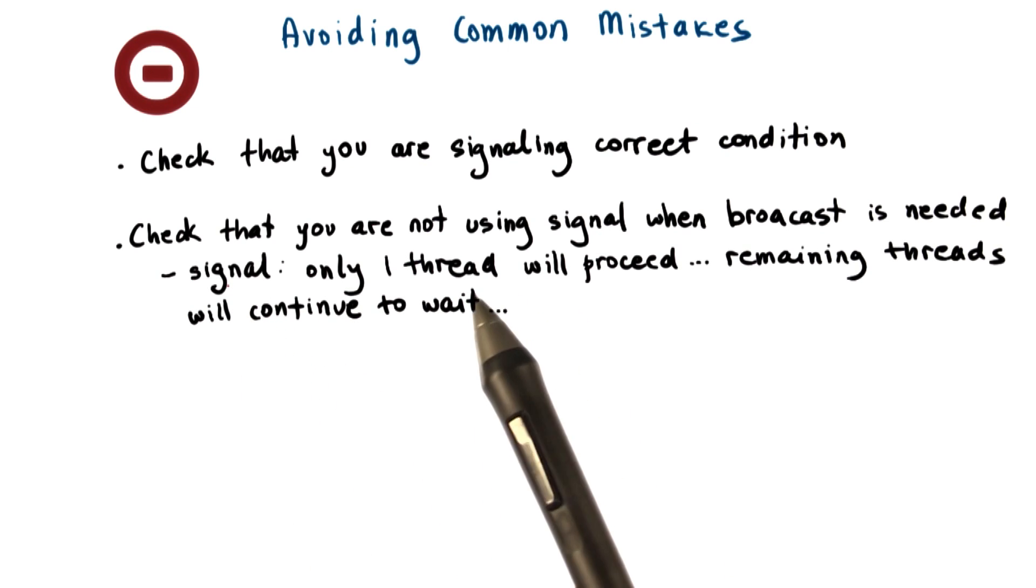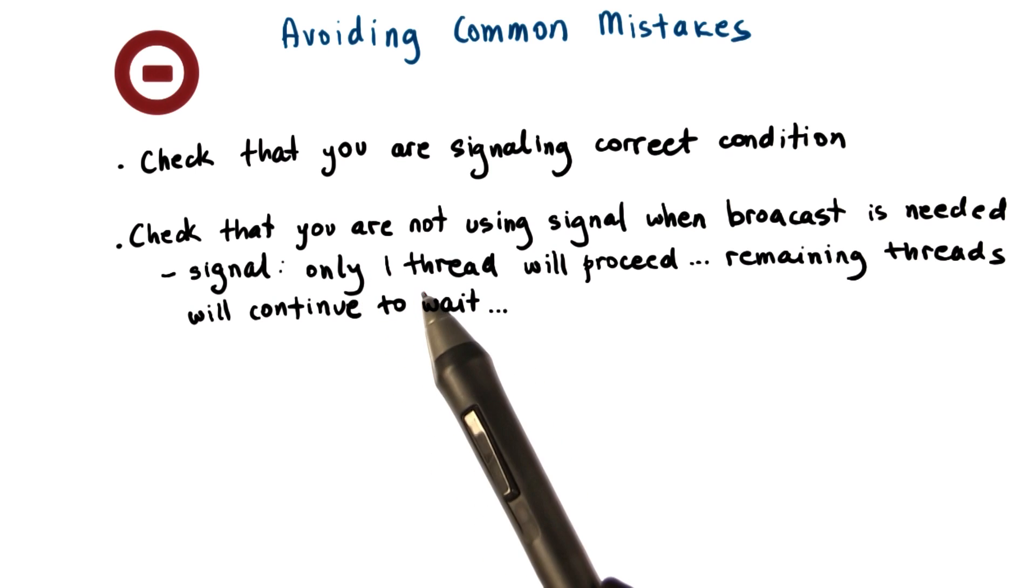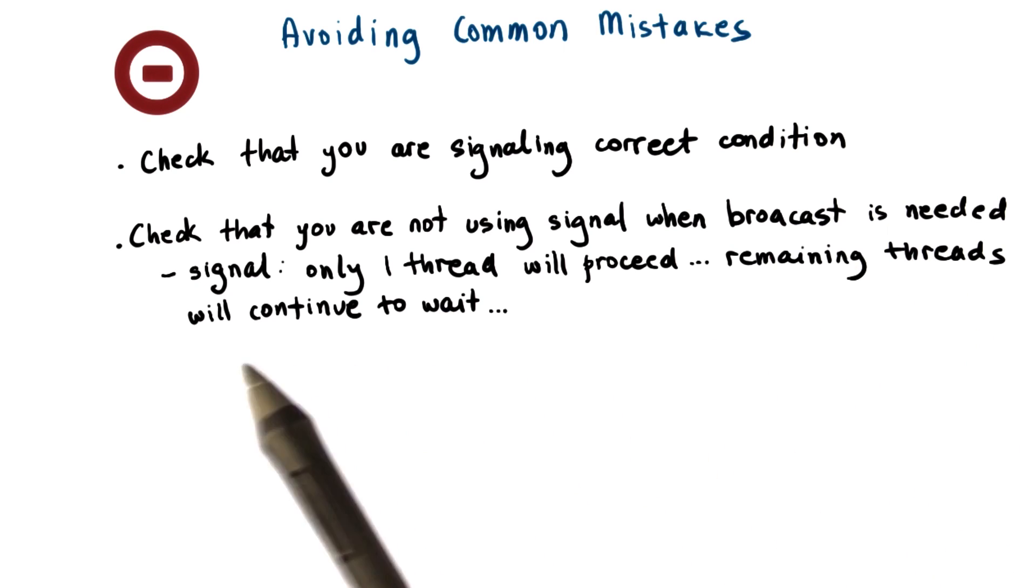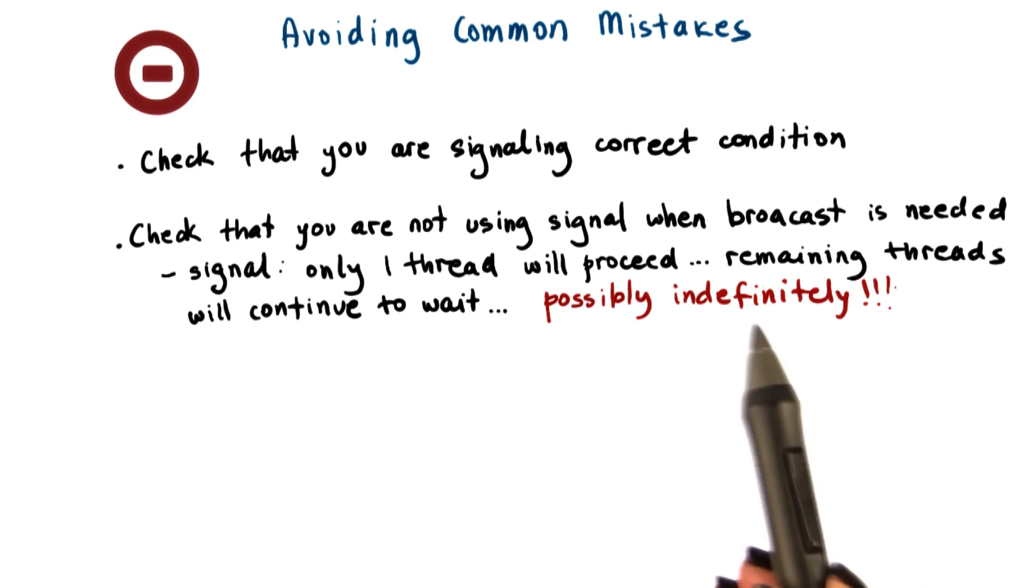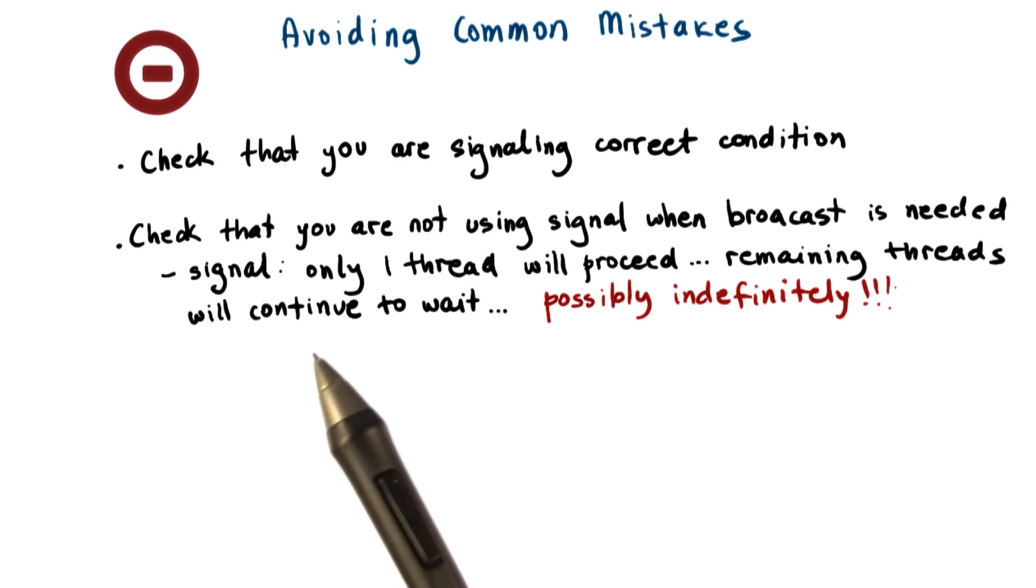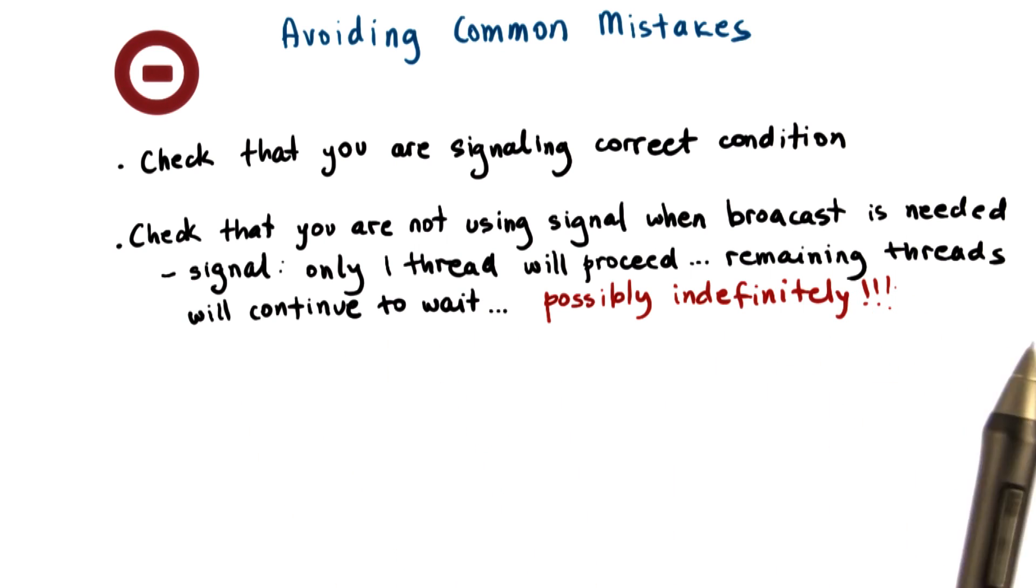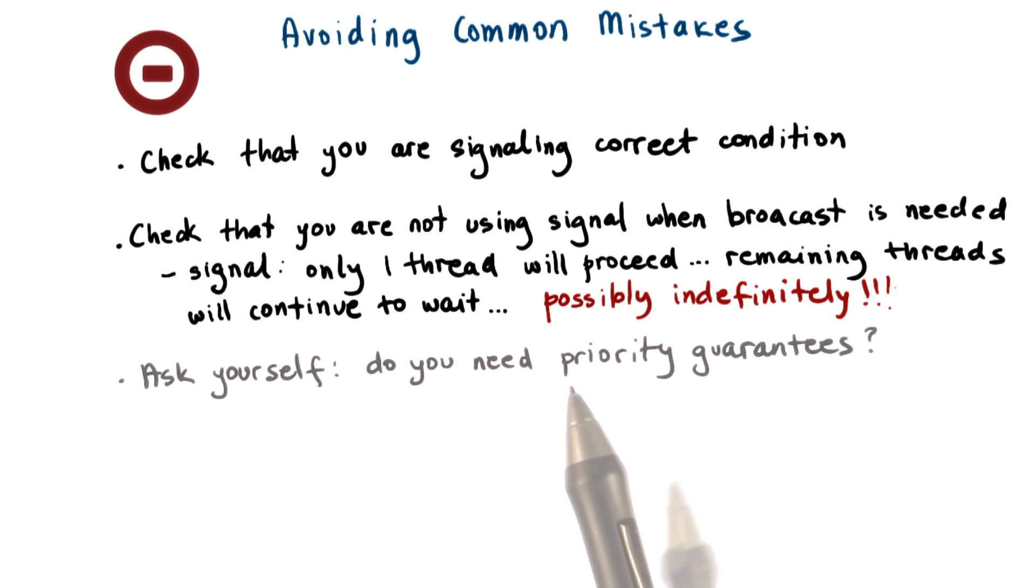Remember that with a signal, only one thread will be woken up to proceed. And if, when the condition occurred, we had more than one thread waiting on the condition, the remaining threads will continue to wait. And in fact, they may continue to wait possibly indefinitely. Using a signal instead of a broadcast can also possibly cause deadlocks and we'll talk about that shortly.